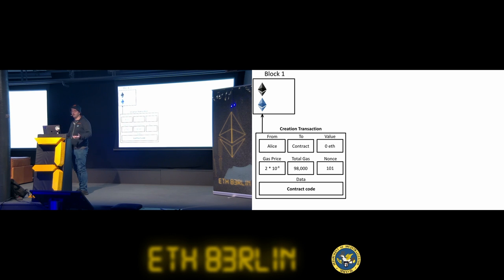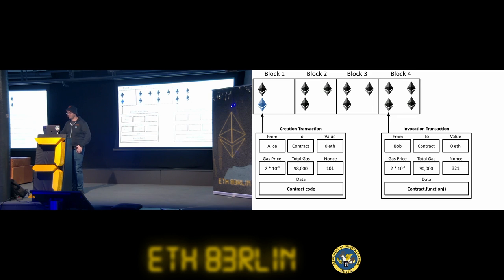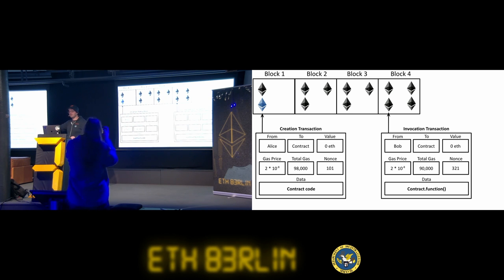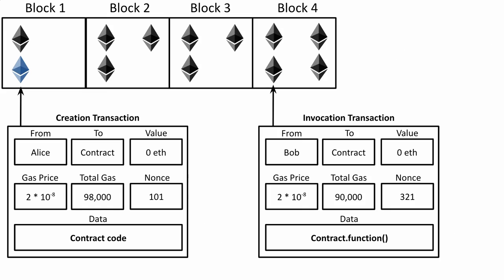For example, a creation transaction deploys the smart contract — the bytecode is in the data field. It gets confirmed and the code is instantiated in the database. Blocks keep getting produced every 12 seconds. In block 4, Bob comes along and wants to cast a vote, so he signs a transaction, sends it to the network, it gets into the blockchain, and it executes the smart contract and updates the database. Between blocks, the smart contract isn't doing anything — just sitting there doing nothing.